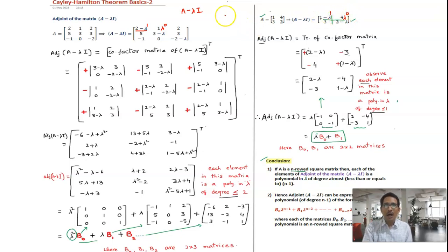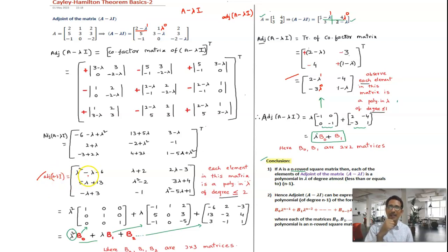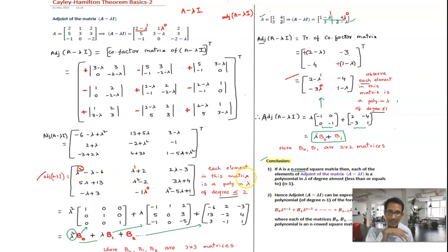The second point concerns the adjoint of (A minus lambda I), which is the transpose of the cofactor matrix. Observing the 2 by 2 case, each element of the adjoint is a polynomial in lambda of degree at most 1. For the 3 by 3 case, each element is a polynomial in lambda of degree at most 2. So each element of the adjoint of (A minus lambda I) is a polynomial in lambda of degree less than or equal to n minus 1.